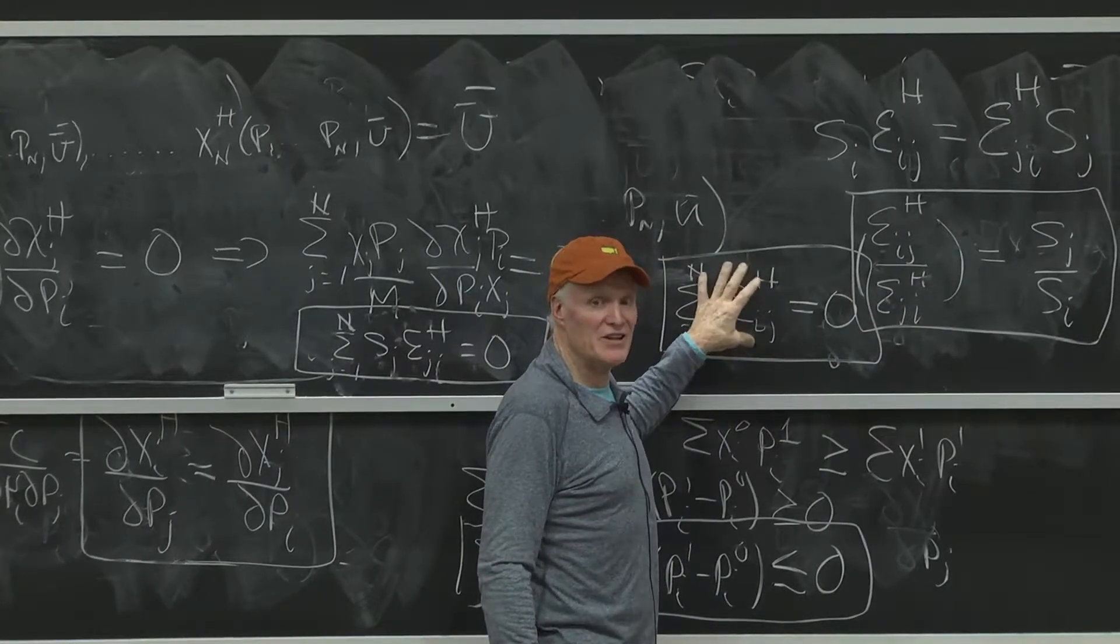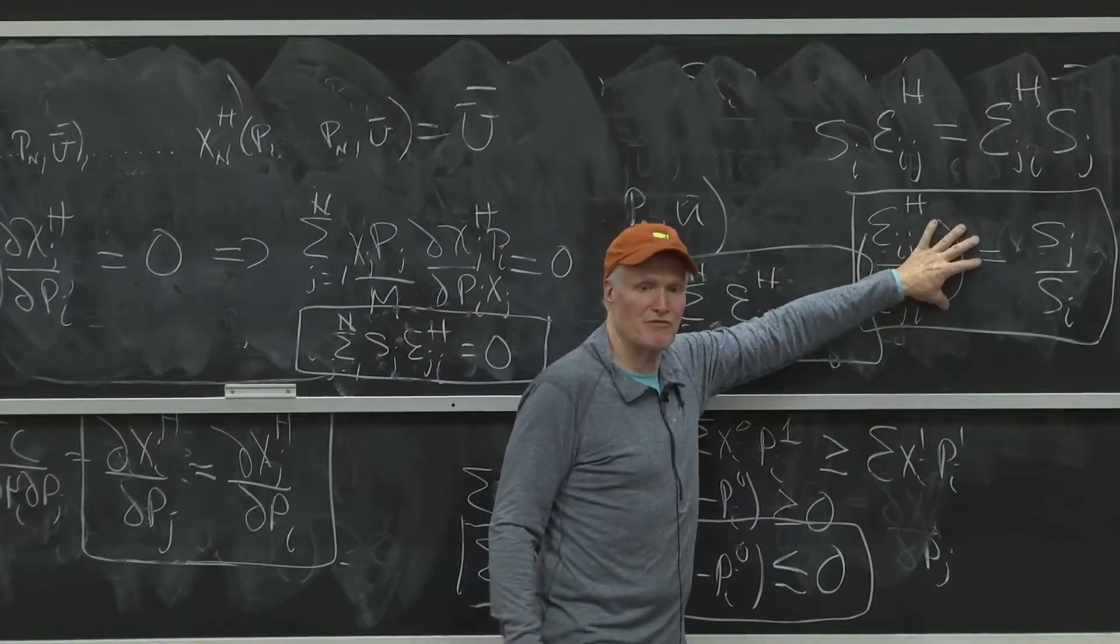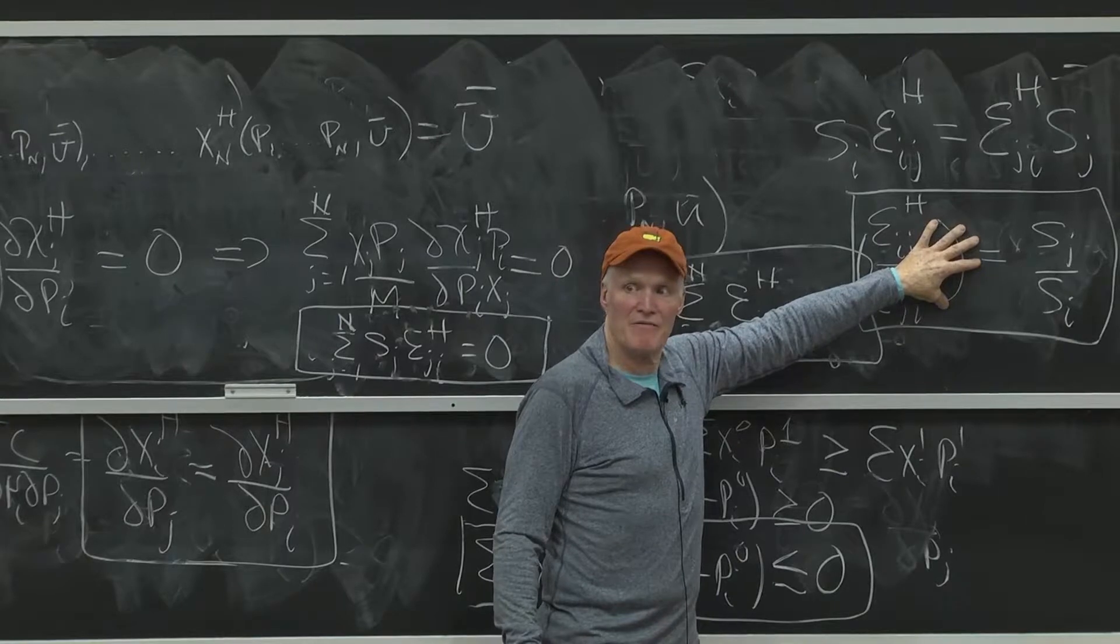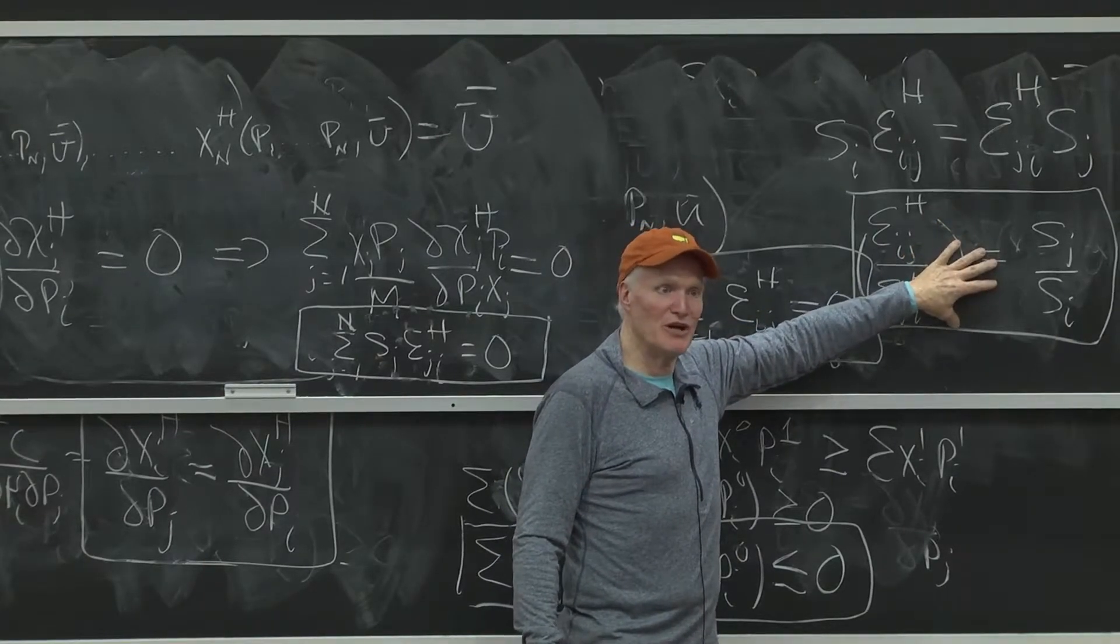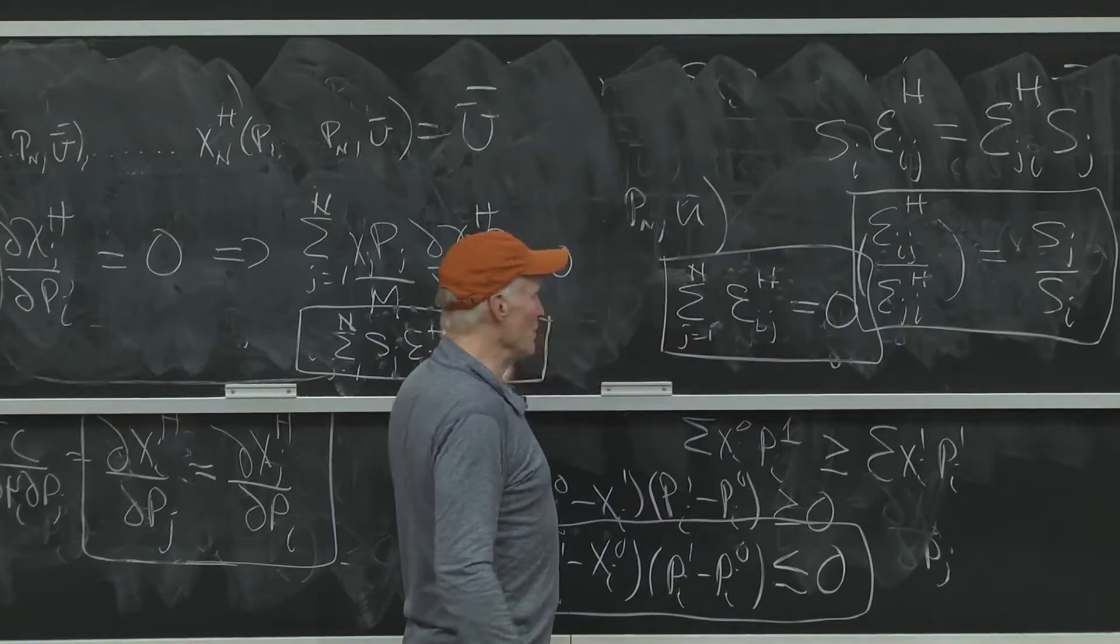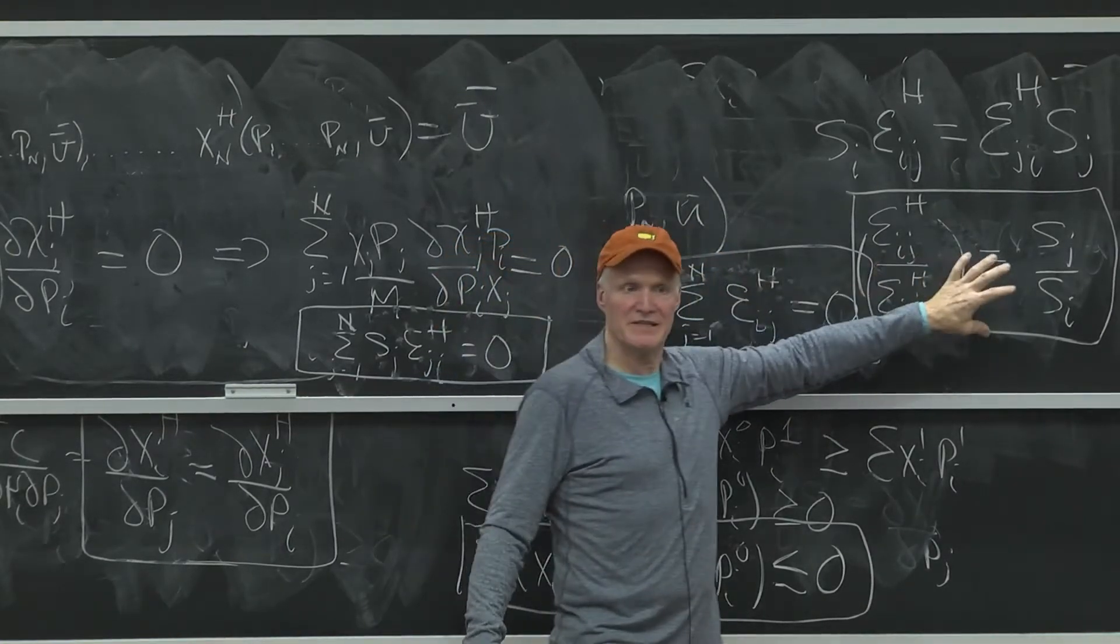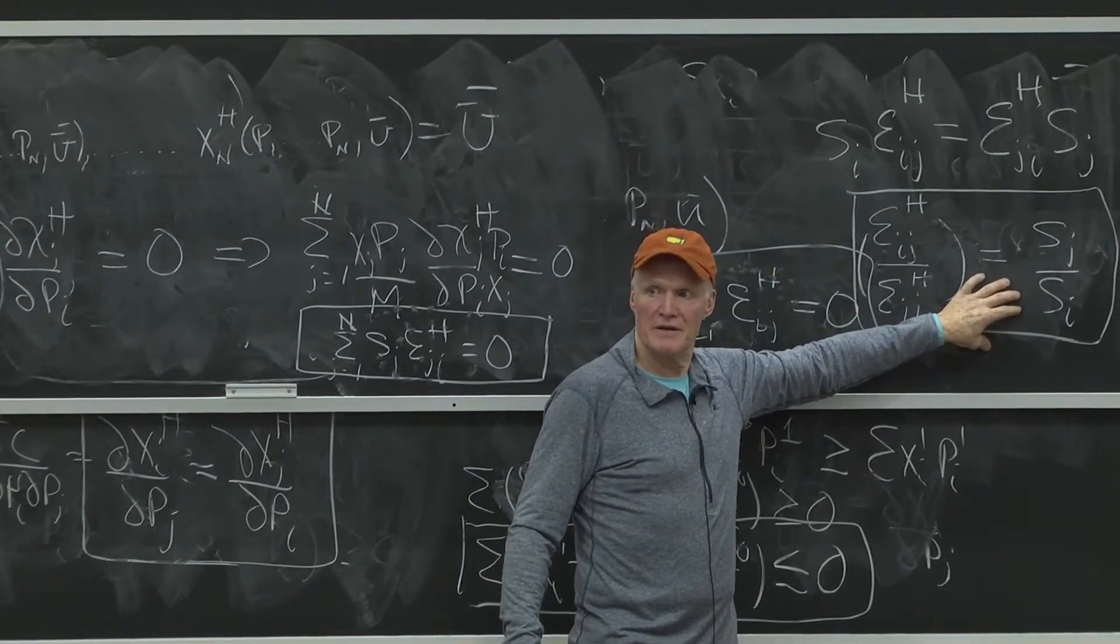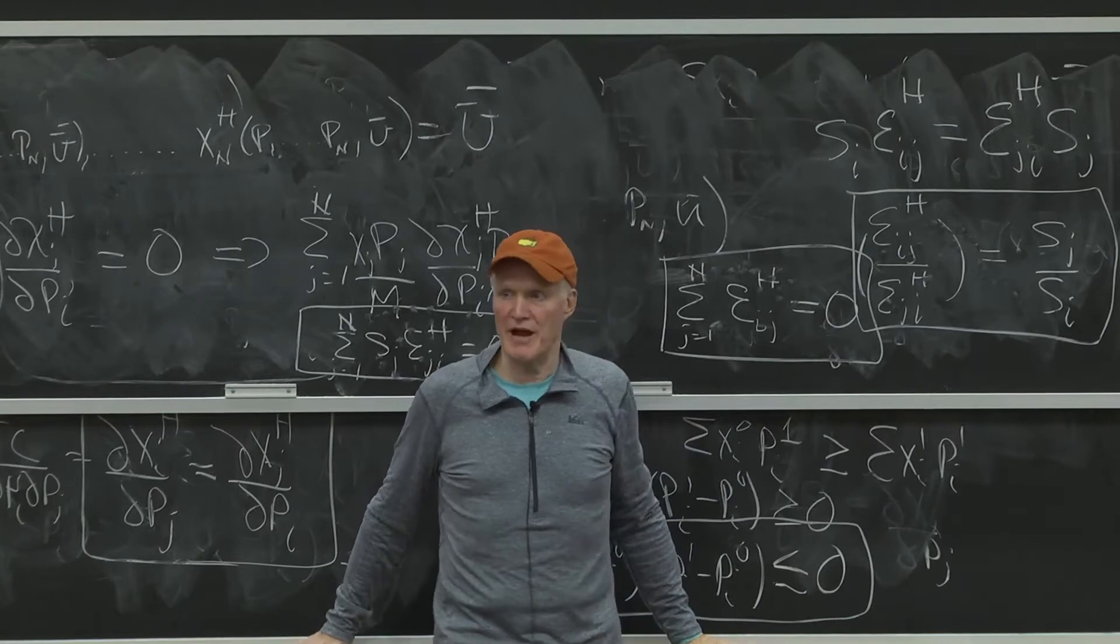It turns out in the two-good case, if I impose this and this, I get symmetry for free. However, unfortunately for us, in more than two goods, these two alone don't do everything. One of them needs to be symmetry. That is, homogeneity and adding up are not enough once you've gotten beyond two goods.